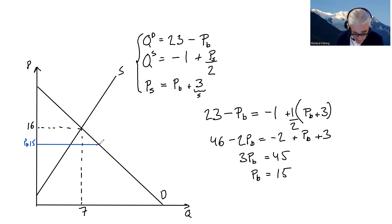What's the quantity there? At that price how much are people demanding? We just plug the price of 15 into the demand function. 23 minus 15 equals 8. The quantity now is 8.